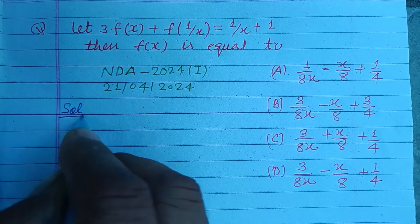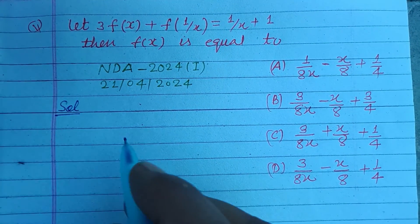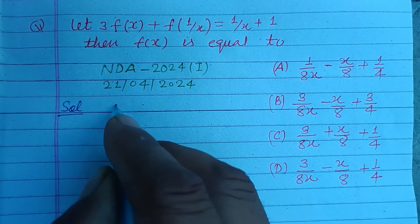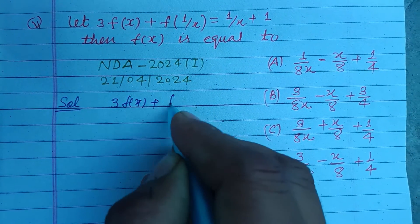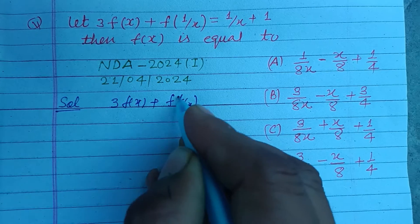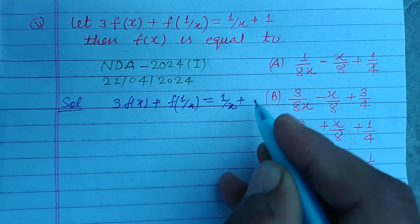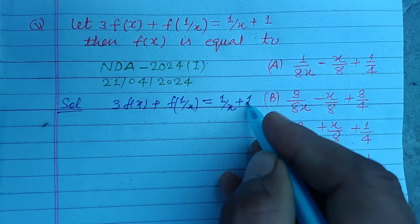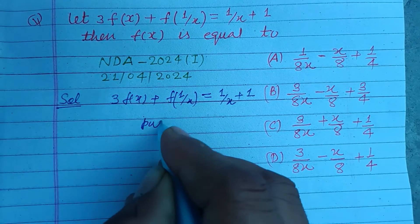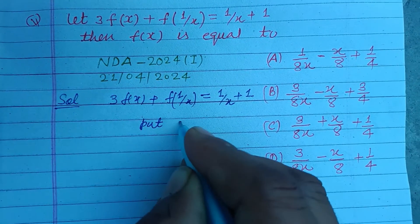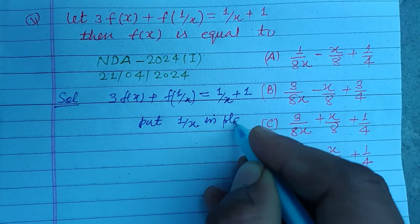A similar type of question was asked in 2023 as well. Here, 3f(x) + f(1/x) is given equal to 1/x + 1. Now we put 1/x in place of x.